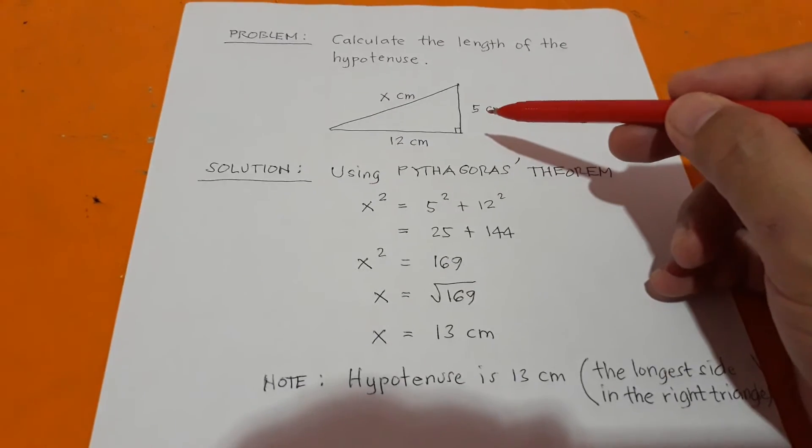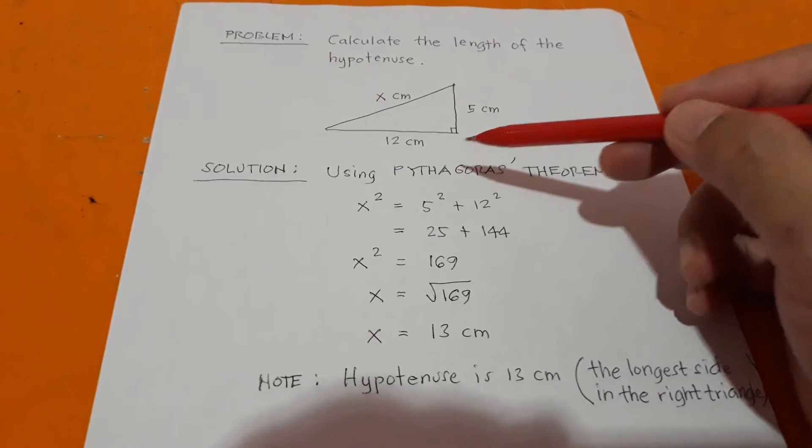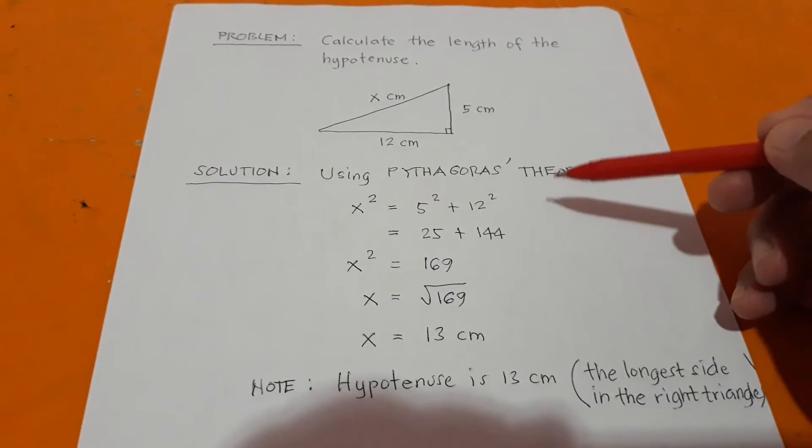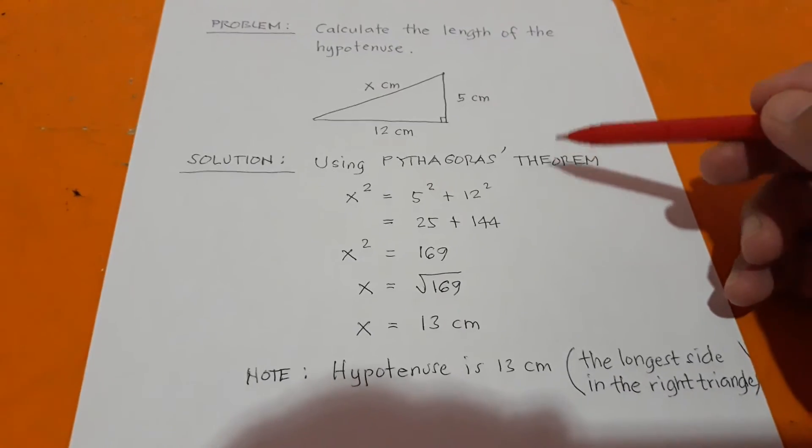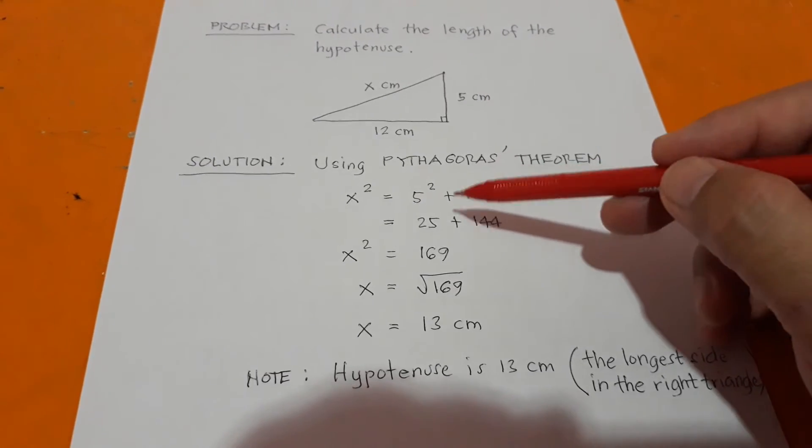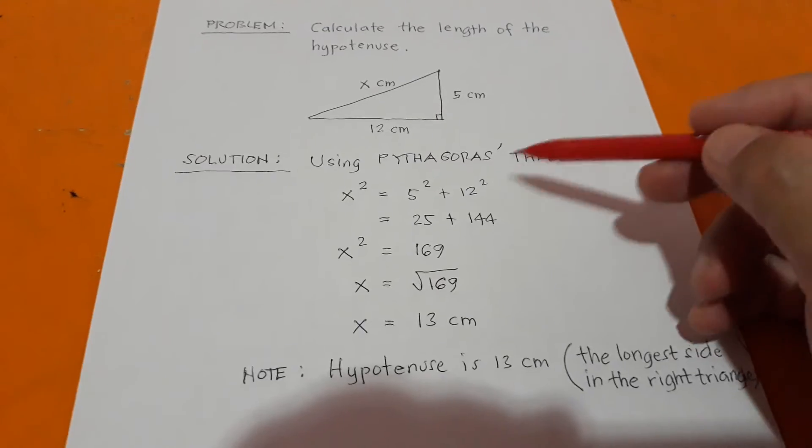5 and 12 centimeters, both are squared because it's the sum of the squares of the other two shorter sides. So we proceed: 5 squared is 25, 12 squared is 12 times 12, which is 144.